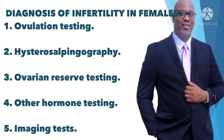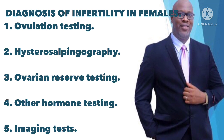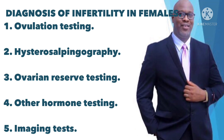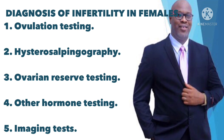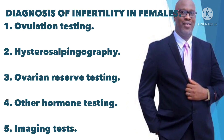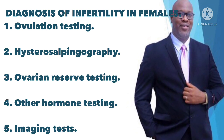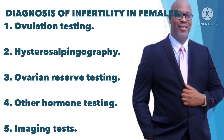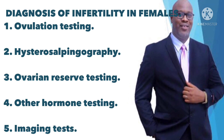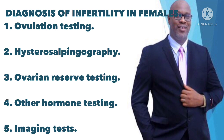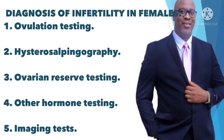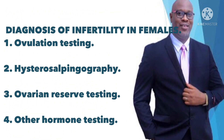4) Other hormone testing — hormone tests can be done to check the levels of ovulatory hormones, as well as thyroid and pituitary hormones that control reproductive processes. 5) Imaging tests — a pelvic ultrasound, which can detect uterine or fallopian tube diseases or abnormalities, may also be done to diagnose infertility in females.